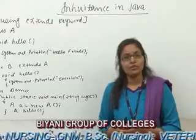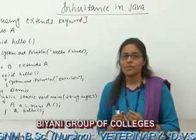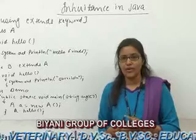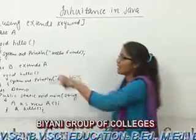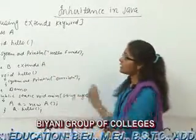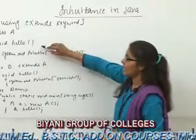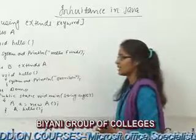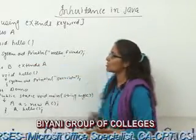Let us know how we use inheritance in Java. For inheritance, we use the extends keyword. Here we have created a class A — this class is the superclass — and we have created a method hello, and we are printing 'hello friends' in this method. Now this class is closed here.